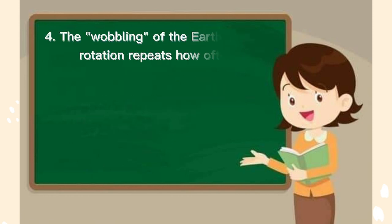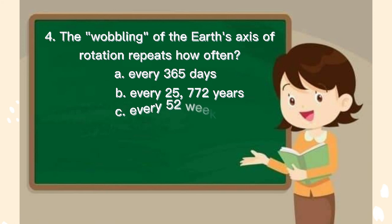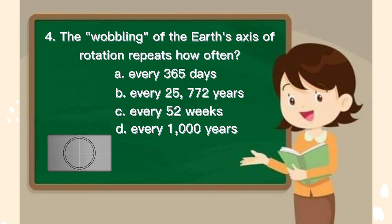Number 4. The wobbling of the earth's axis of rotation repeats how often? A. Every 365 days, B. Every 25,772 years, C. Every 52 weeks, D. Every 1,000 years. The correct answer is B.